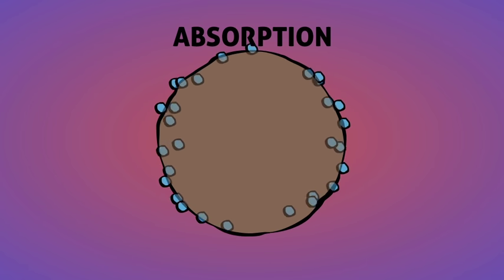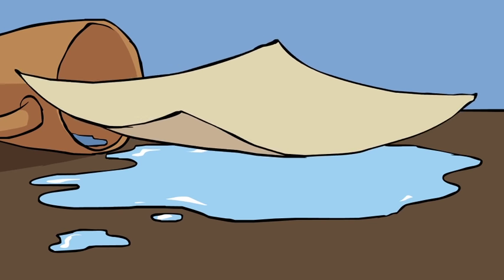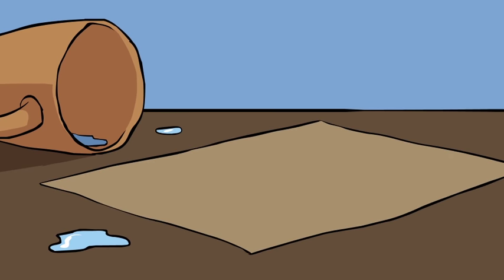Absorption happens when atoms, molecules, or ions of one phase enter inside a substance of another phase and are incorporated by it, say liquid absorbing into a towel.